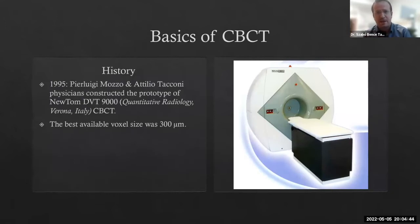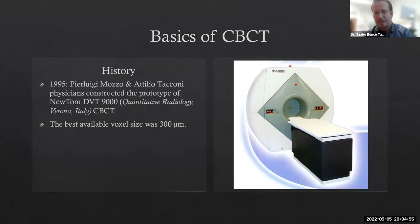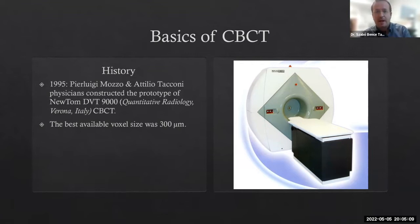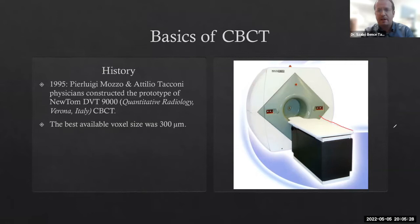First of all, as a historical aspect, we have to remember that in 1995, Pierluigi Mozzo and Attilio Tacconi constructed the prototype of the Newton DVT 9000 CBCT — the first CBCT device for dental radiology on the market. The best available voxel size was 300 micrometers. It was constructed for the patient in a supine position. Nowadays, there are a lot of other possibilities, of course.